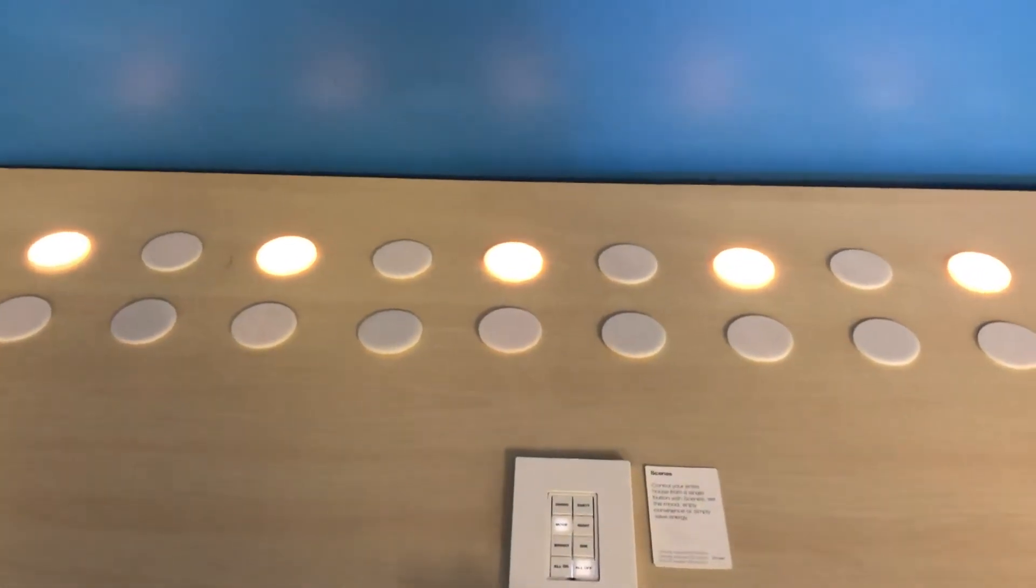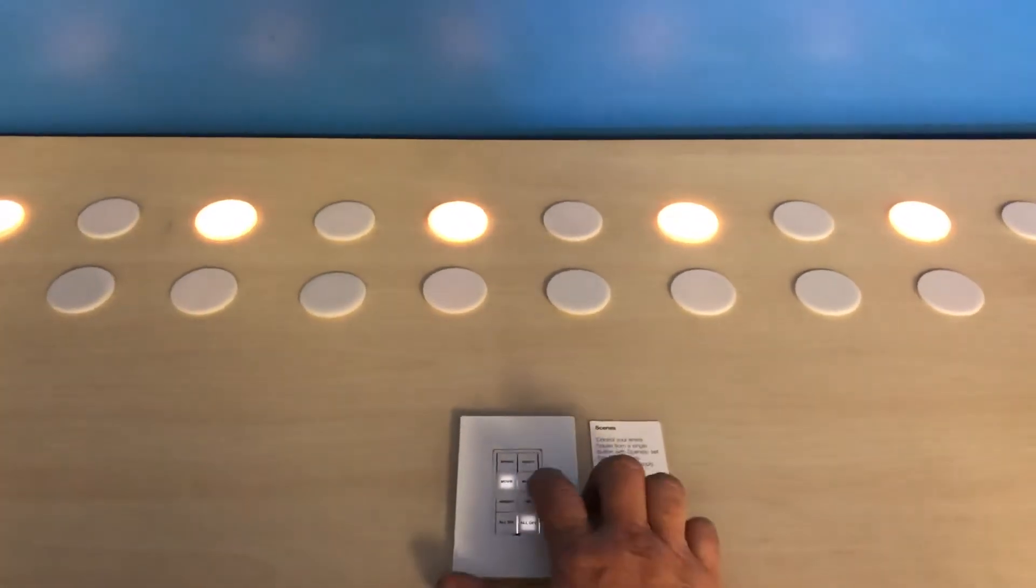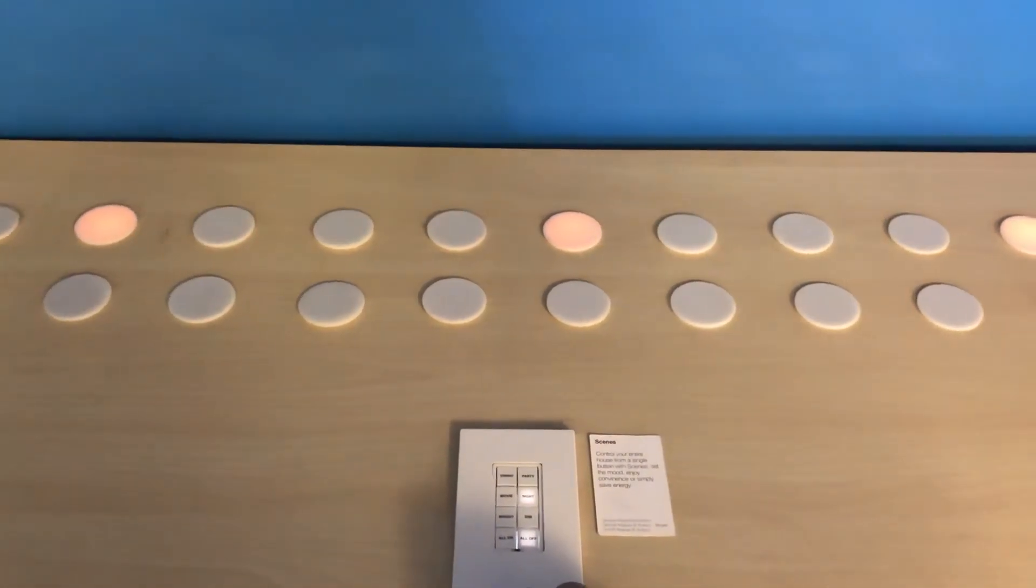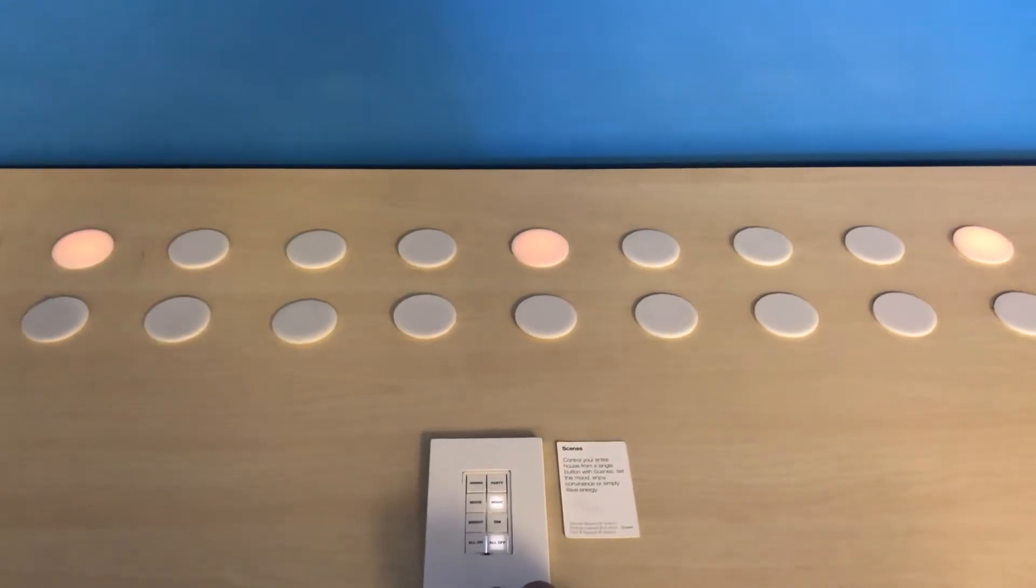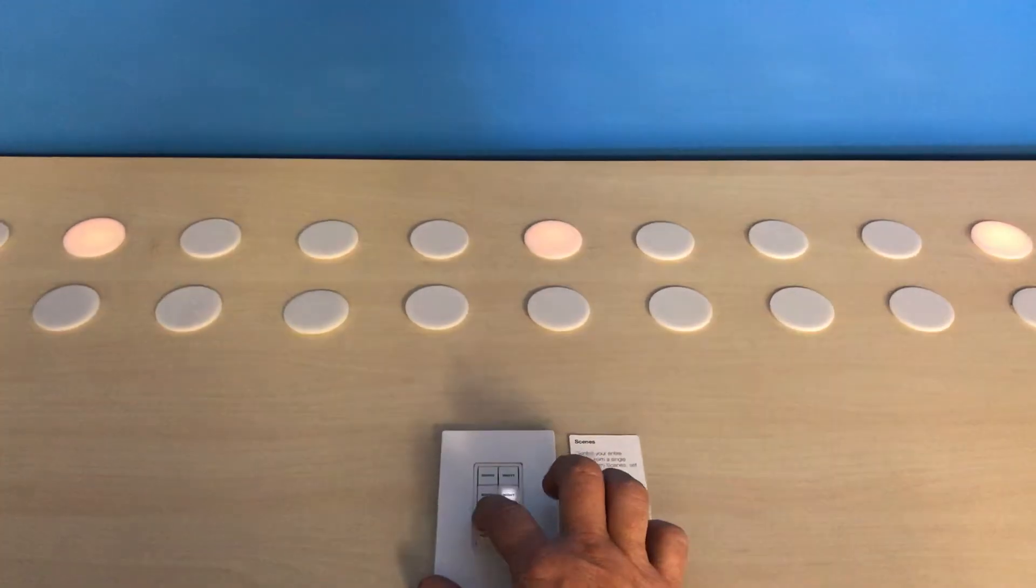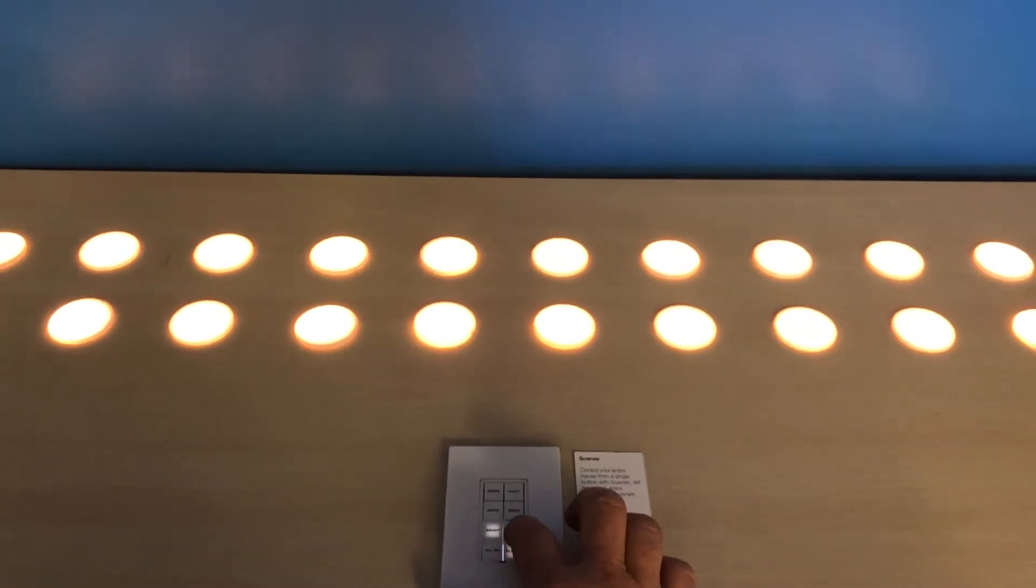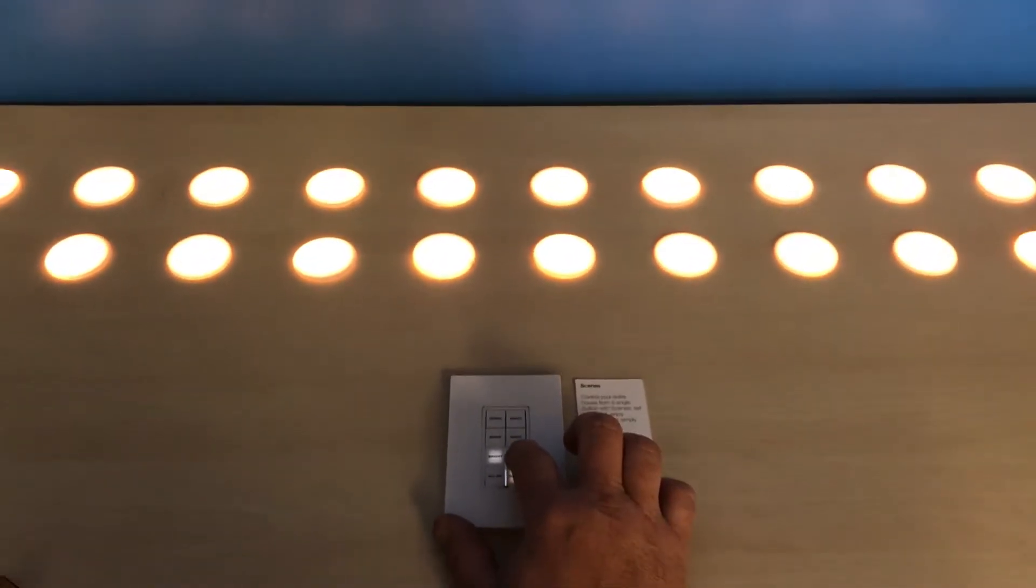I also have a nighttime, and that adjusts them down to a real low level and shuts off other lights. There's my bright, which turns everything on full bright, and you'll notice that the buttons as I push them, the others go off.